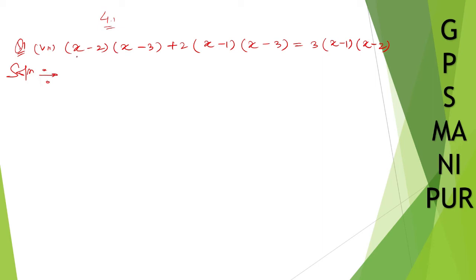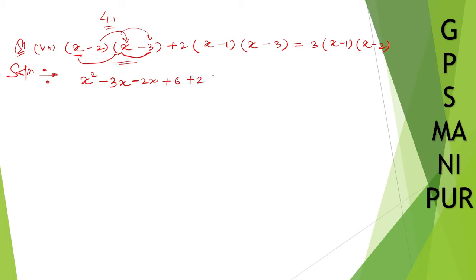For the solution, take x and multiply into both x and 3: x into x gives x squared, and minus 3 into x gives minus 3x. Now for the next bracket, plus 2 multiplied in: x into x gives x squared.